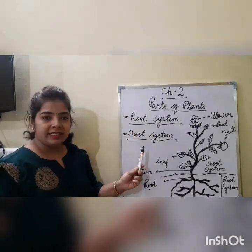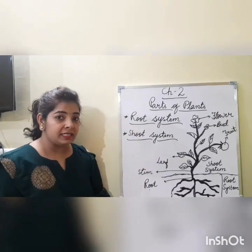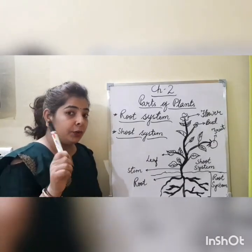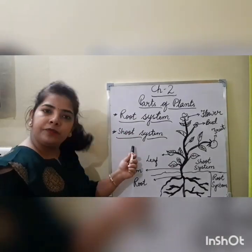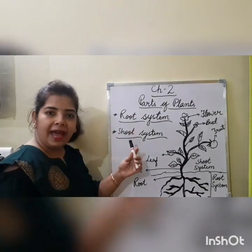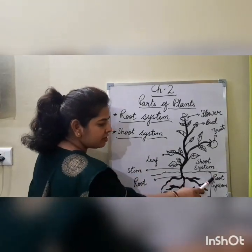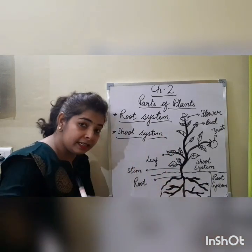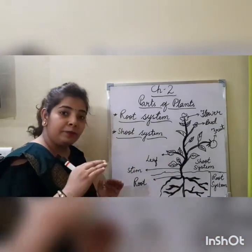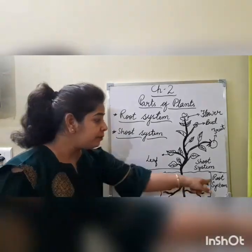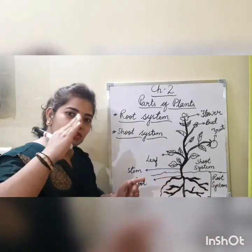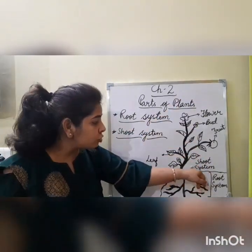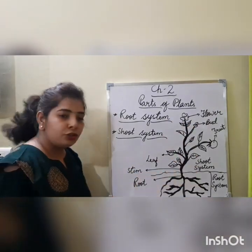Root system and shoot system are the two main parts of our plant. Root system is the part which is below the ground — under the soil. That is the root system. And the part which is above the soil is our shoot system.